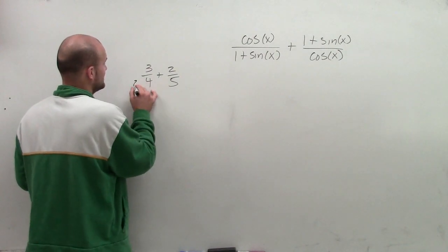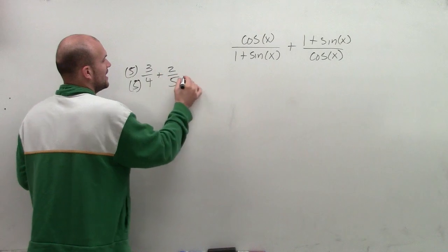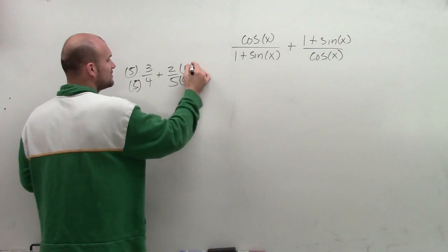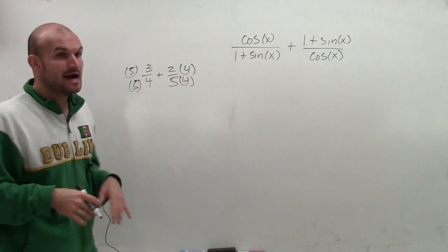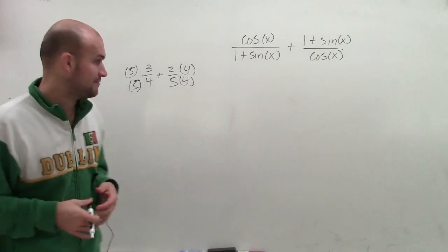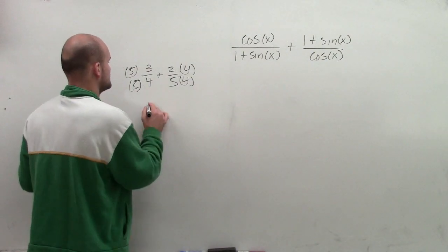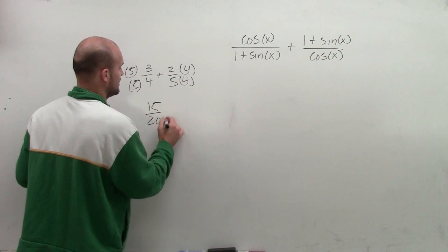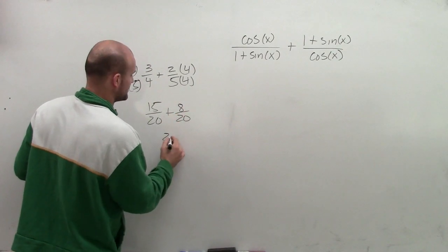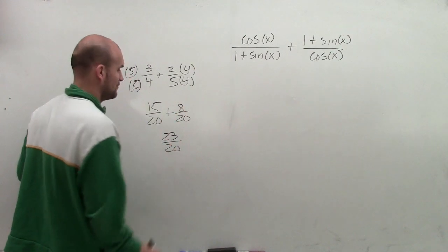So to get to 20, I need to multiply by 5 on the left side and 4 on the right side. And then make sure that I multiply the numerator and denominator by the same term, so I'm going to have like fractions. Therefore, I have 15 over 20 plus 8 over 20, which ends up giving me 23 over 20.